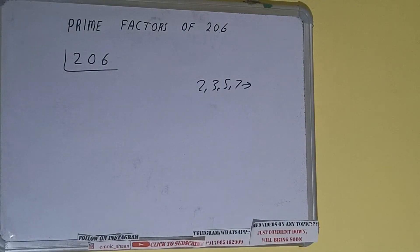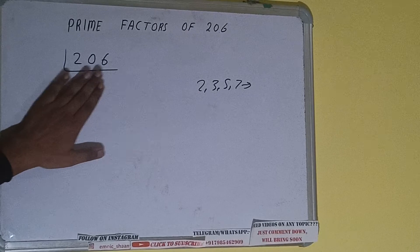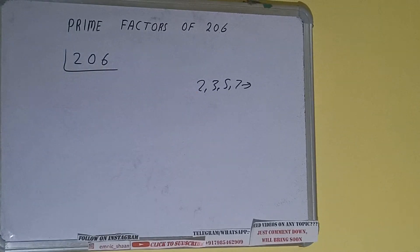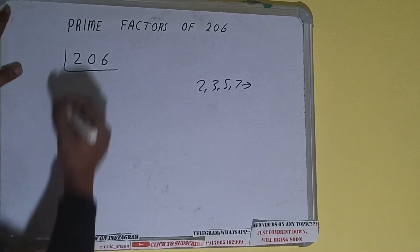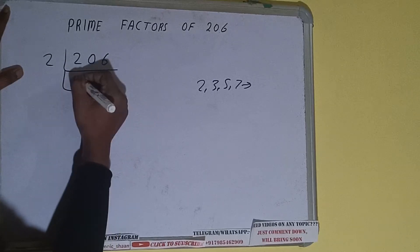Alright so we'll check with the lowest prime number we have that is 2. Is the number 206 divisible by 2? Yes it is because the number is even and we'll be having 103.